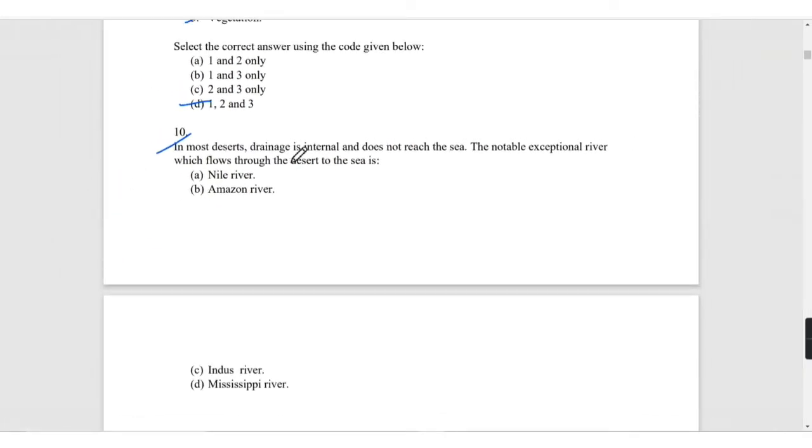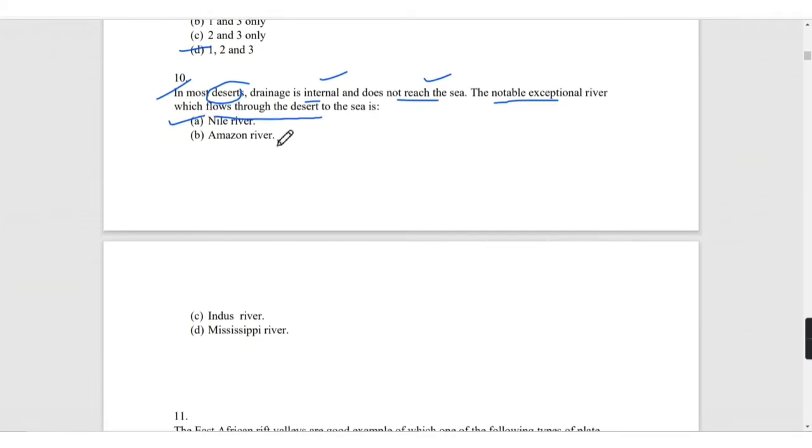In most deserts, drainage is internal and does not reach the sea. The notable exceptional river which flows through the desert to the sea is the Nile River.